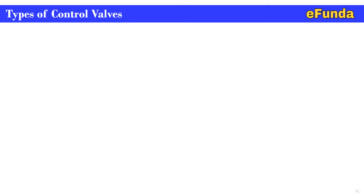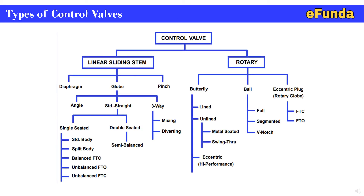One can refer to the classification flow chart where the control valve is divided into linear sliding stem valves and rotary type valves. Further, the linear type is divided into diaphragm, globe, and pinch type valves. The rotary type is divided into butterfly, ball, and eccentric plug type rotary globe valves.